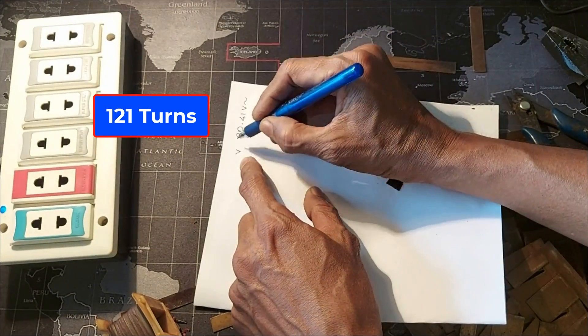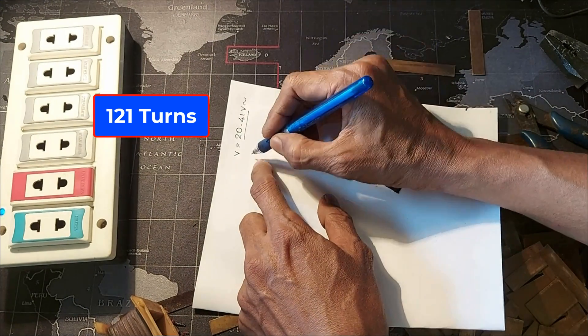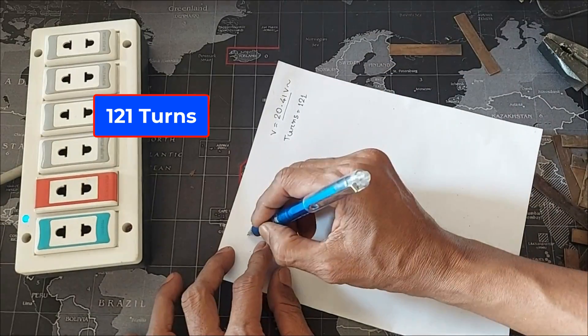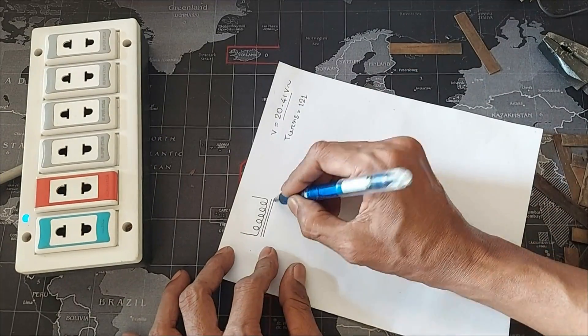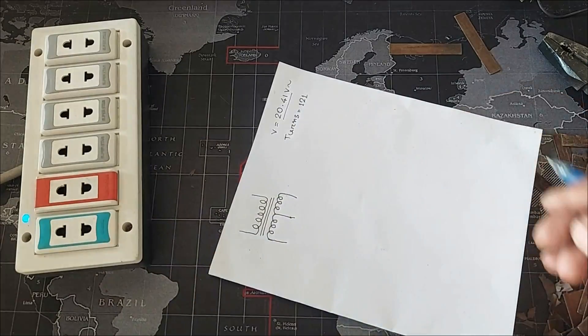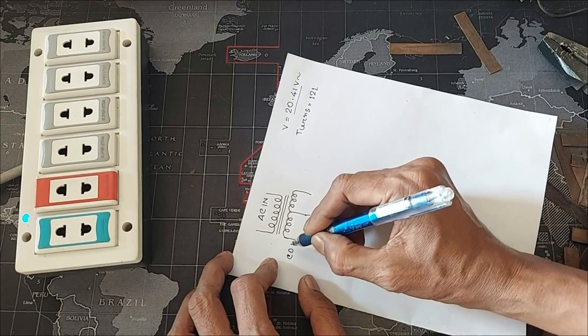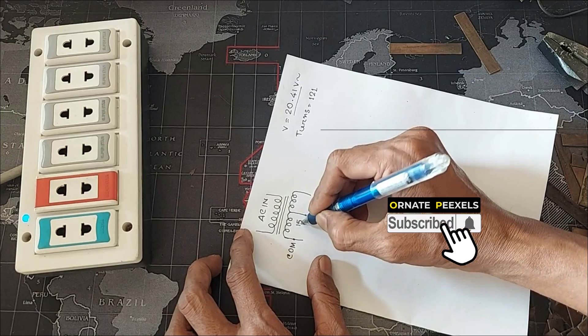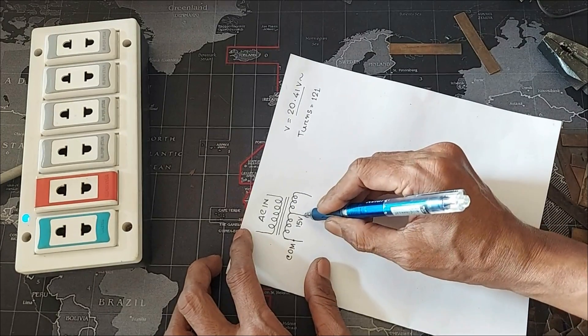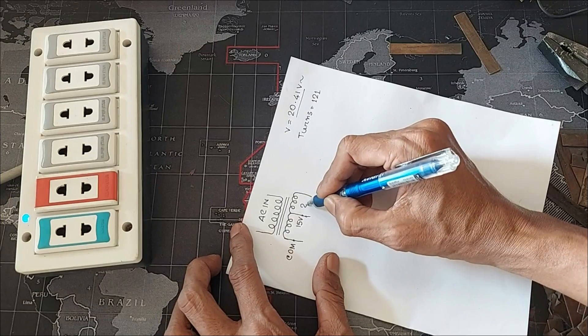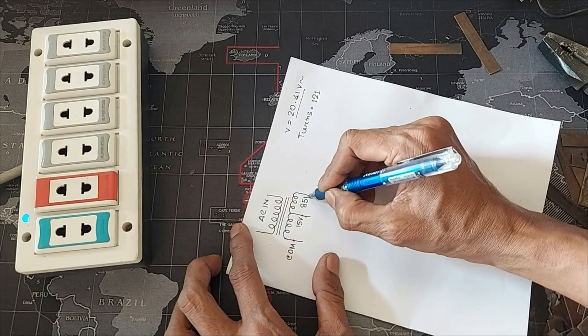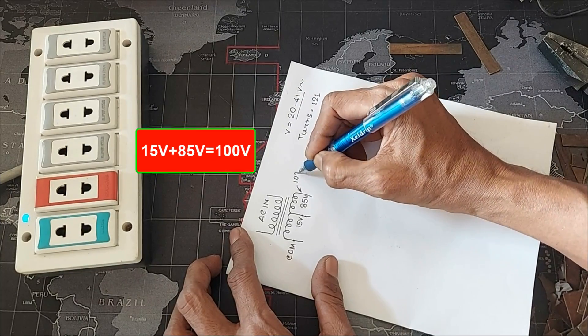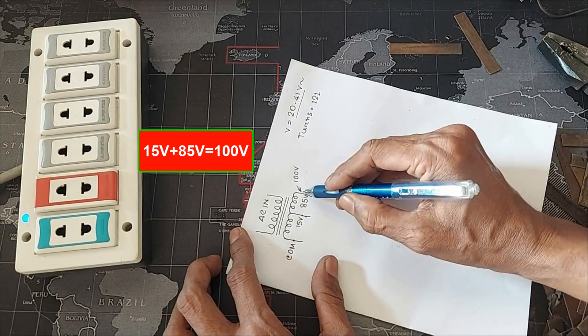The voltage here was 20.41 volts for that 121 turns in the coil. This is the transformer of the short killer circuit. From its common tap to center tap, there will be 15 volts. It will be the operating voltage of the short killer circuit. Then it will be 85 volts from the center tap to the finishing tap. Accordingly, the finishing tap is 100 volts from the common tap.